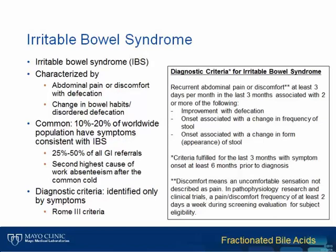In this session, I will describe a new test for probing the etiology of Irritable Bowel Syndrome, or IBS. Irritable Bowel Syndrome is characterized by abdominal pain or discomfort with defecation, and changes in bowel habits or disordered defecation. It is quite common, with 10-20% of the worldwide population displaying symptoms of IBS, estimated to cause up to 50% of all GI referrals and is the second highest cause of work absenteeism after the common cold. The diagnostic criteria utilizes only patient symptoms and is defined by the Rome III criteria.